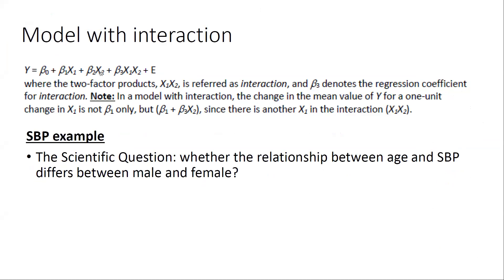But if you believe there's a potential effect modifier, usually the effect modifier X2 would be a dummy variable, which means this variable will take two levels: 0 and 1. Zero is referred to as the baseline or reference level, and 1 is referred to as the other level or higher level. The interaction between X2 and X1 will be the third term, X1 times X2. If X2 is a dummy variable, X1 times X2 will be equal to 0 when X2 takes the reference level 0.